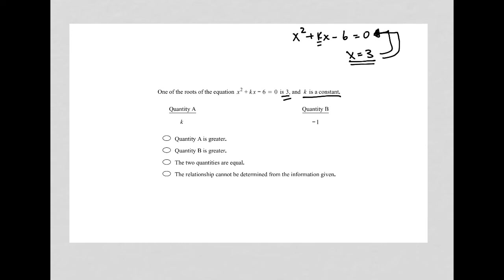So when x is 3, instead of x squared, I have 3 squared plus instead of kx, I'd have 3k and then minus 6 is equal to 0.